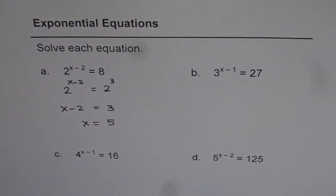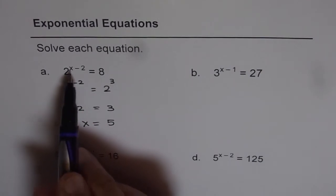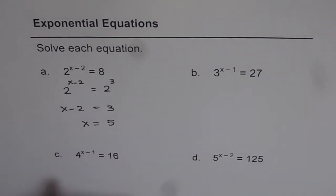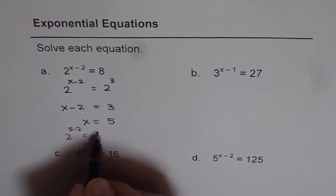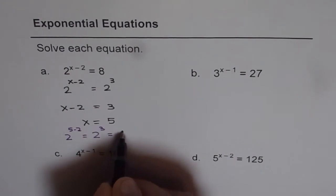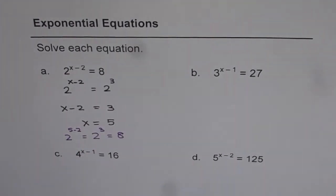That is how we can do these questions. Well, as a check, there is no harm. Let's substitute 5 for x and see what we get. We get 2 to the power of 5 minus 2 that is equal to 2 to the power of 3 and that is indeed 8, the right hand side. So that is how we are going to solve these equations.